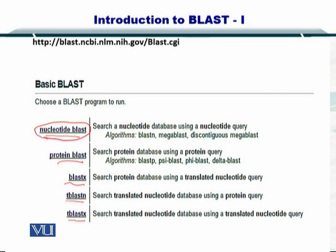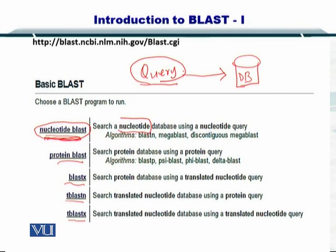For nucleotide BLAST, you simply search for nucleotides. Your query — the sequence you are trying to search within the database — is a nucleotide sequence, and your database is a nucleotide database. For protein BLAST, your query is a protein sequence and your database is a protein database.